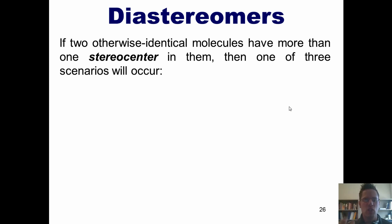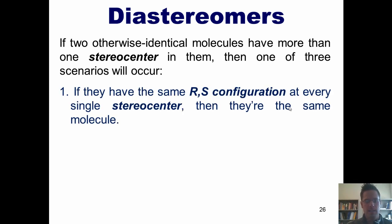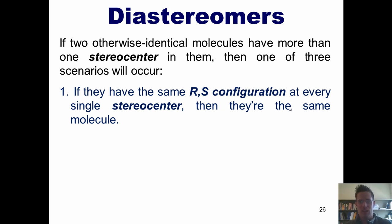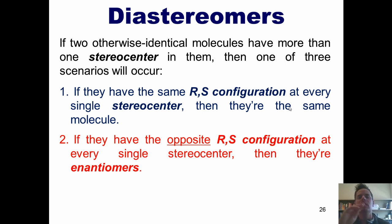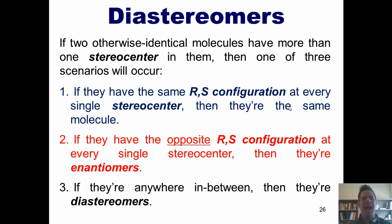Here's the take home. If you have two otherwise identical molecules with more than one stereocenter, one of three scenarios will occur. One: if they have the same RS configuration at every single stereocenter, they're the same molecule — even if drawn in slightly different rotations. Two: if they have the opposite RS configuration at every single stereocenter, they're enantiomers. Three: if they're anywhere in between — some the same and some opposite — we call them diastereomers.